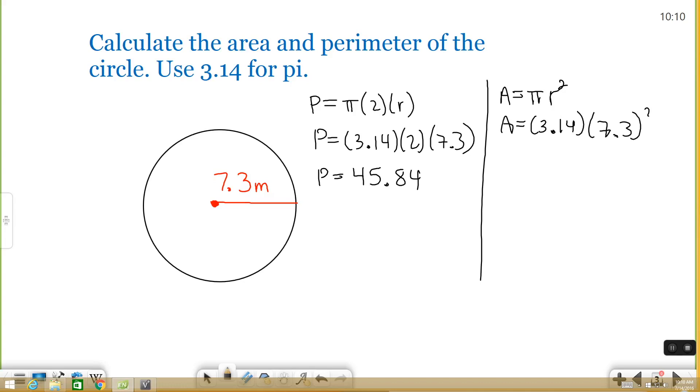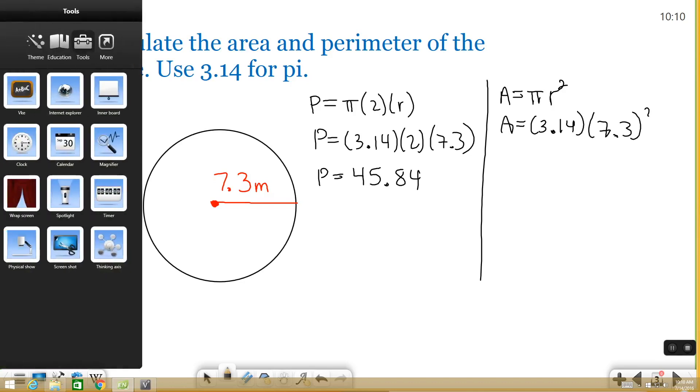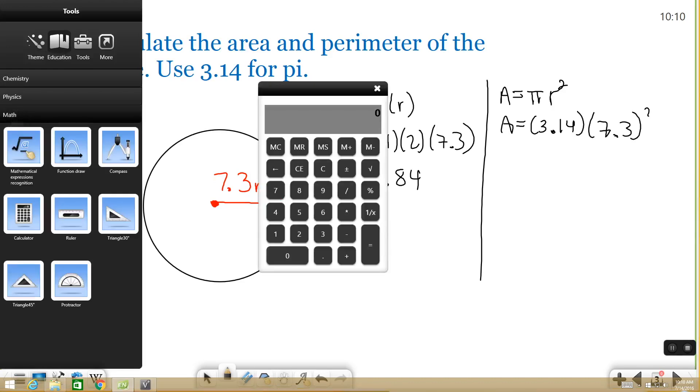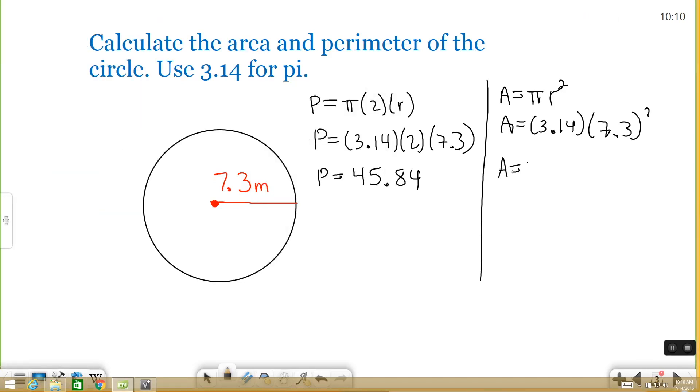So again, type this in your calculator. This is a little bit bigger number, so I'm going to use my calculator for this. 3.14 times 7.3 times 7.3 again. And you get 167.33. So that's how you find perimeter and area of a circle.